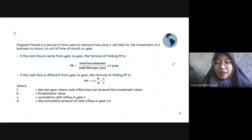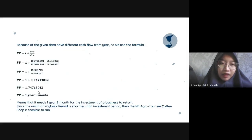b is investment value, c is the cumulative cash inflow in year t, and d is the cumulative amount of cash inflow in year t plus one. Because the given data have different cash flows from year to year, we use the formula PP equals t plus b minus c over d minus c.